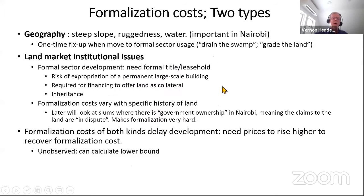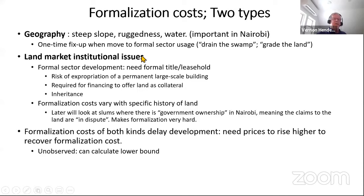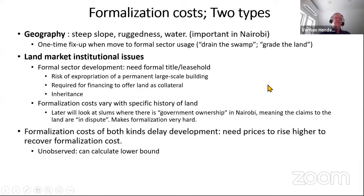That's a neat-looking city, but it's not how real cities look. Why? There are stochastic elements — one is geography. Nairobi is fairly rugged with steep slopes, some water; you've got to come in, drain the swamp, and grade the land. That's one formalization cost.